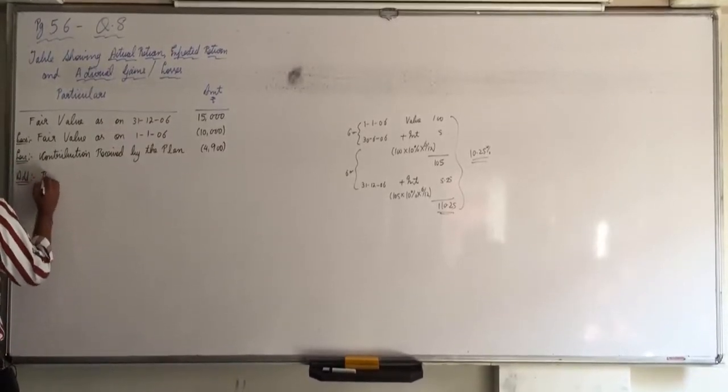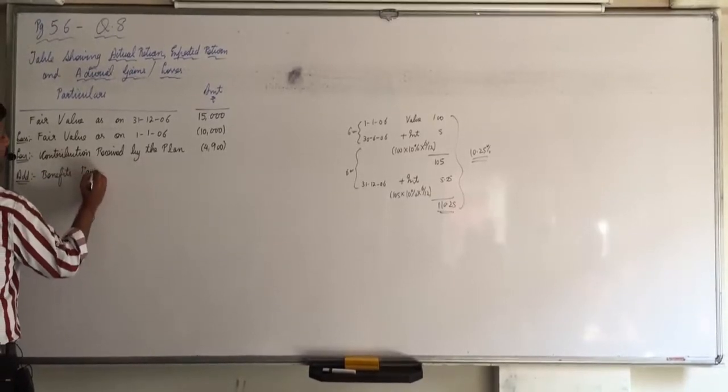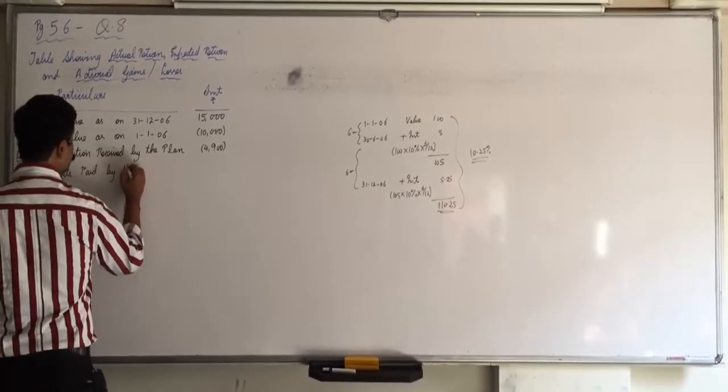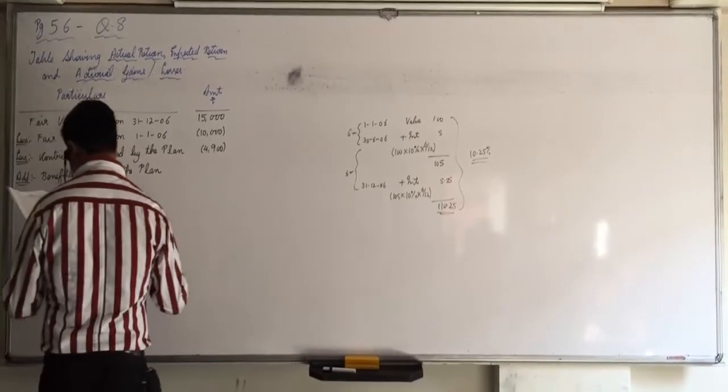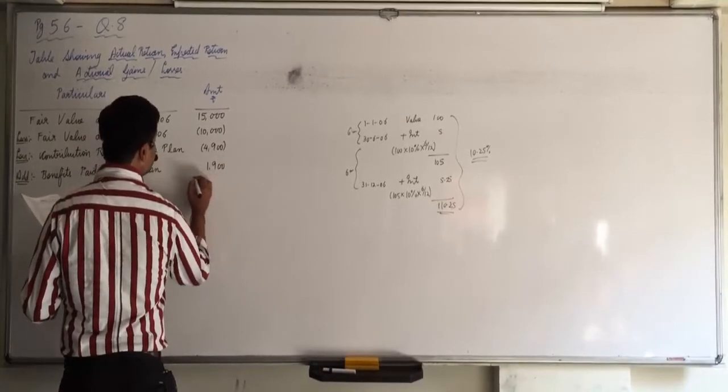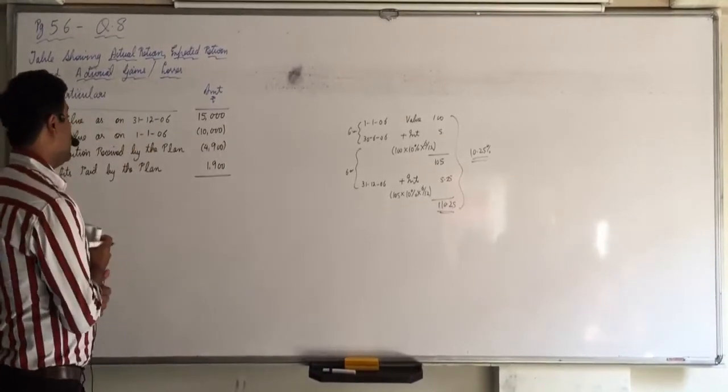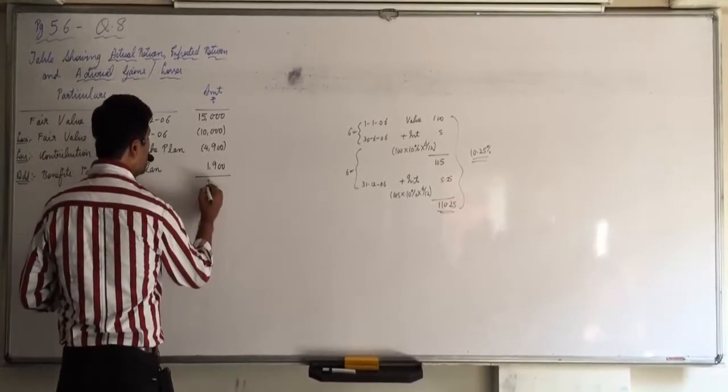And benefits paid by the plan. What are the benefits paid by the plan? 1900. So 15 minus 10 is 5, minus 4900 plus 1900 is 2000. Yes, this 2000 is actual return or actuarial return.